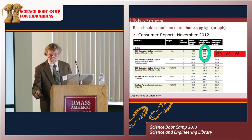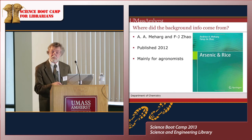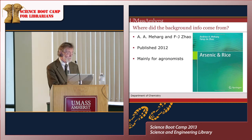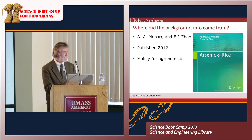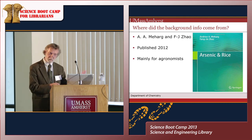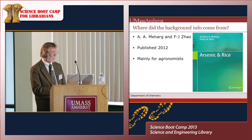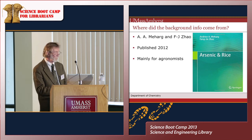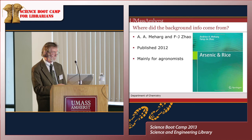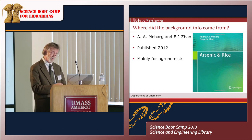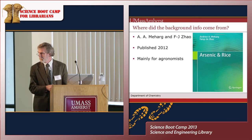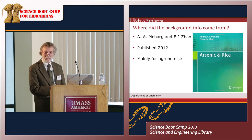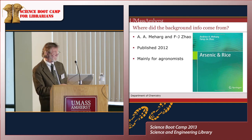If you're interested in more information — if I've piqued your interest about toxic compounds in our foodstuffs — this book tells you everything about arsenic and rice and more. The only problem is it's written mainly for agronomists, not for consumers or measurement scientists. It tells you a lot about why arsenic compounds are there and what might be done about it. A lot of people are very concerned about the world's rice supply, which is more or less contaminated with arsenic compounds. There is no such thing as arsenic-free rice. It was published in 2012.